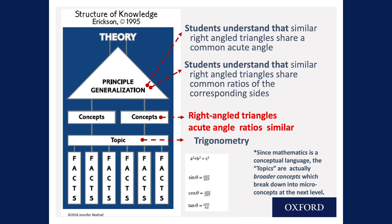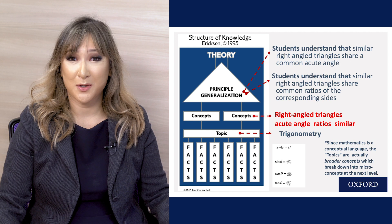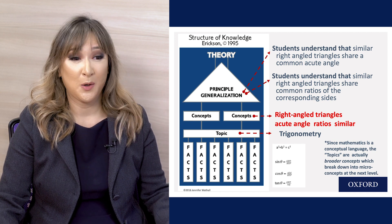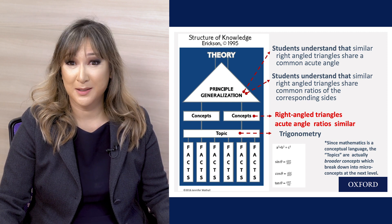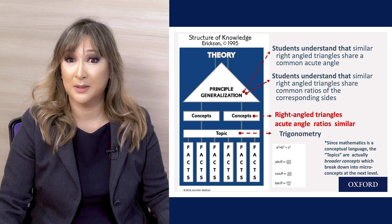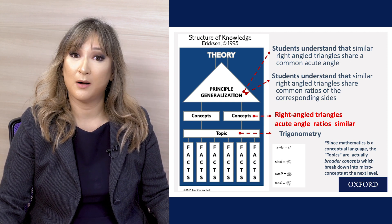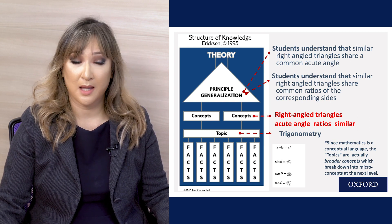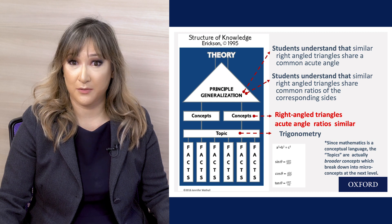The first example is on the topic of trigonometry. At the bottom there is a foundational layer called the facts — in trigonometry, some facts could be a² + b² = c², or the trigonometric ratios in symbolic form. Simply stating a² + b² = c² does not reflect any understanding. The concepts we could draw from trigonometry include right angle triangles, acute angles, ratios, and similarity. A statement of understanding could be: students understand that similar right angle triangles share common ratios of the corresponding sides.